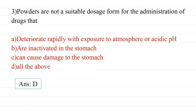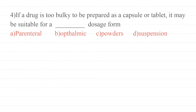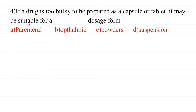Fourth question: If a drug is too bulky to be prepared as a capsule or tablet, it may be suitable for which dosage form? Powders are the answer because if a drug is very bulky, it cannot be compressed into a tablet or filled into a capsule, so powders are used instead.